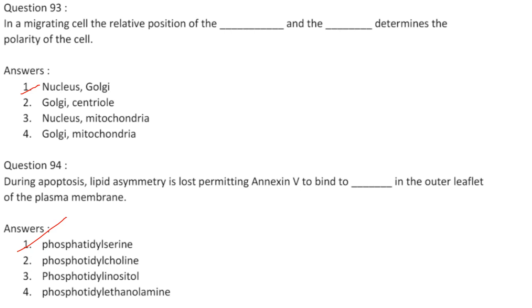During apoptosis, lipid asymmetry is lost, permitting annexin 5 to bind to phosphatidylserine in the outer leaflet of the plasma membrane. The surface of healthy cells has lipids asymmetrically distributed; phosphatidylserine is normally restricted to the inner leaflet. However, during apoptosis, lipid asymmetry is lost and phosphatidylserine becomes exposed on the outer leaflet. Annexin 5 binds to this phosphatidylserine. Answer is option 1, phosphatidylserine.